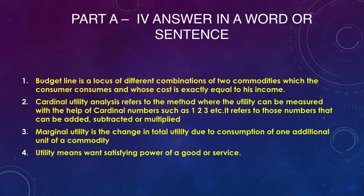We now come to the next section of Part A — question and answers for one mark each. The questions are: What is a budget line? What do you mean by cardinal utility analysis? Give the meaning of marginal utility. What is utility? Expand MRS. What do you mean by indifference curve? And what is demand? The answer for the first question: the budget line is a locus of different combinations of two commodities which the consumer consumes and whose cost is exactly equal to his income.